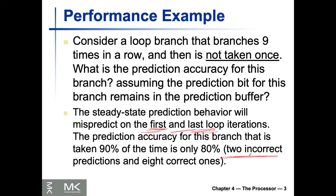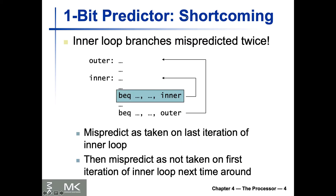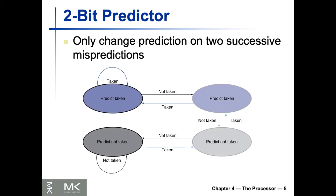On average in a steady case we're going to have two mispredictions. We can make this more sophisticated — instead of one bit, we define two bits, so we can define four states for our branch prediction. The shortcoming of the one-bit predictor was obvious: one misprediction for entering and one for exiting. So let's go for a more sophisticated one — the two-bit branch predictor.